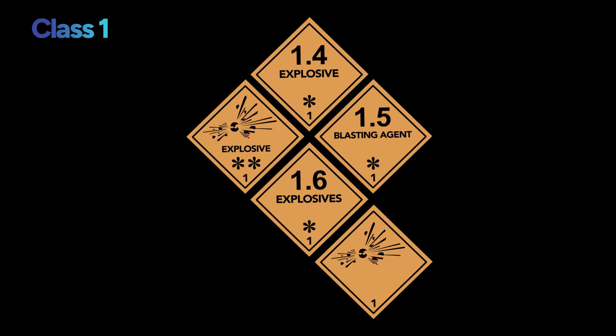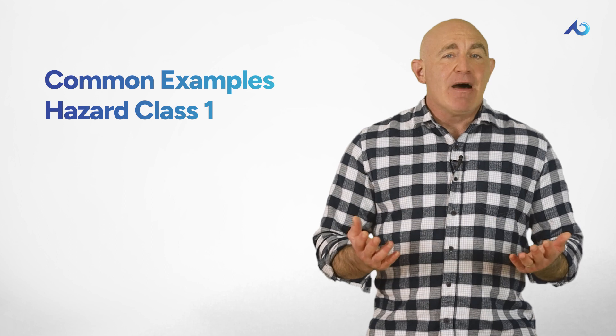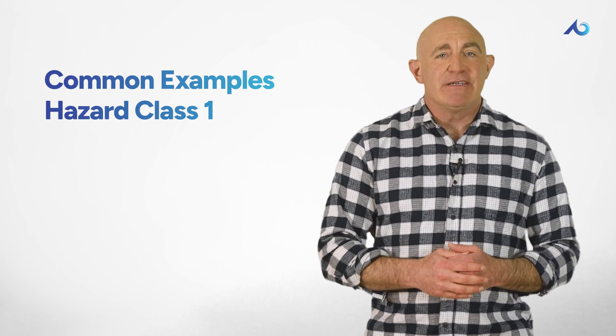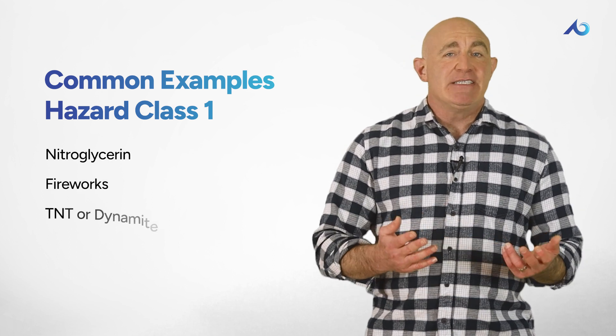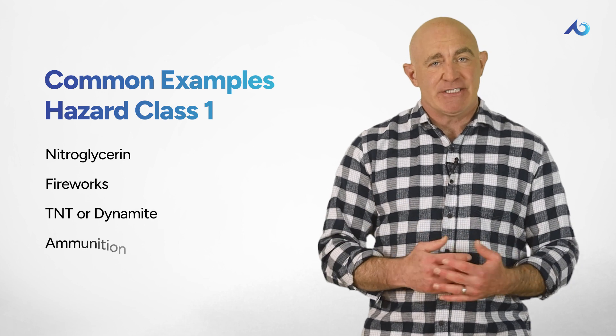Class 1 involves explosives with a maximum detonating hazard, a flammable hazard, or a combination of the two. Blasting agents — materials consisting of a fuel and oxidizer intended for blasting — are also within this class. Some common examples of hazard class one include nitroglycerin, fireworks, TNT or dynamite, and ammunition.